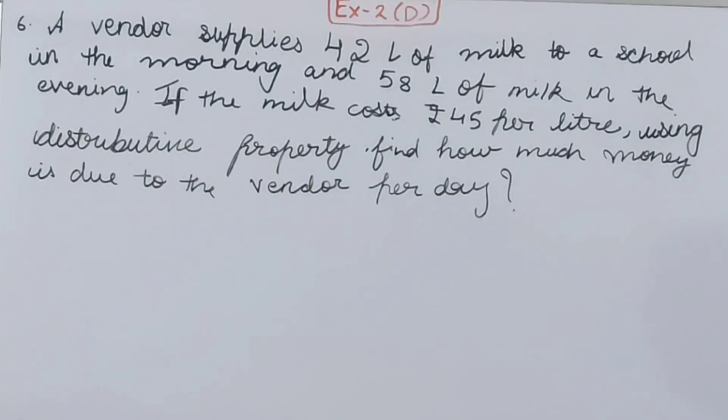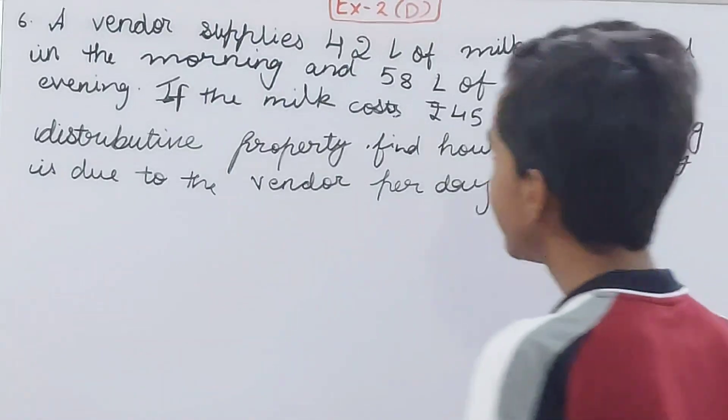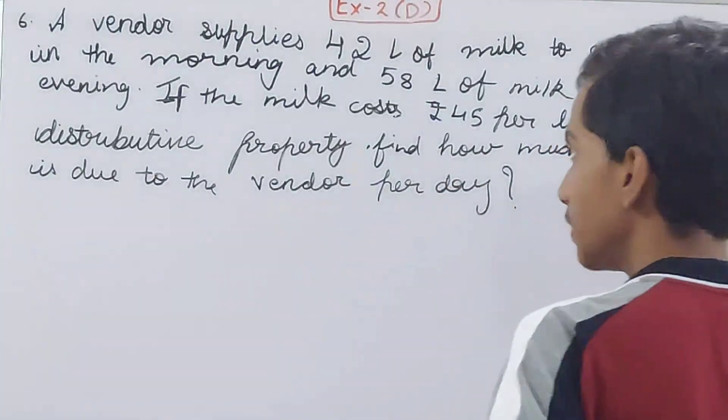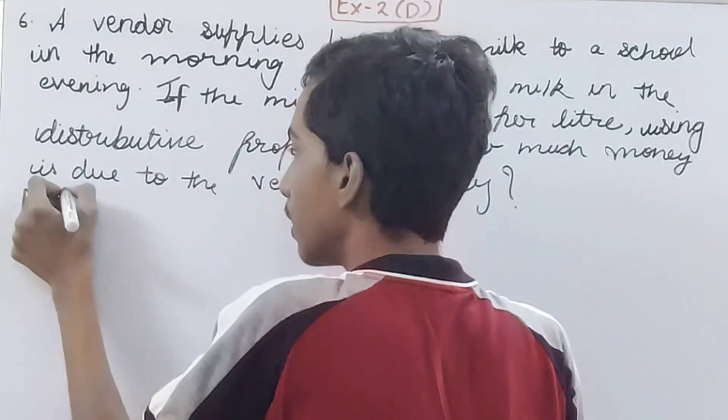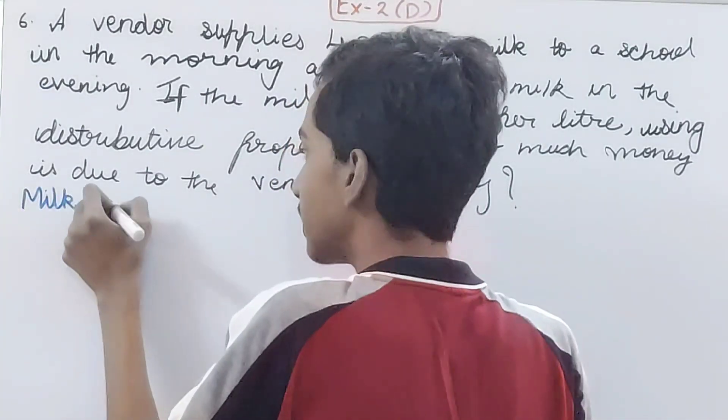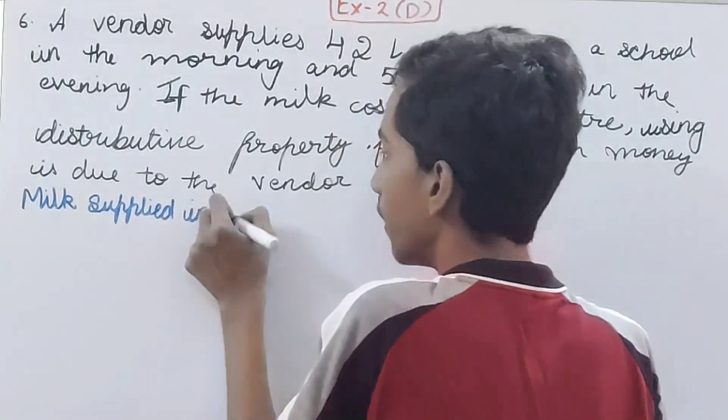...find how much money is due to the vendor per day. Now see here, a vendor supplies 42 liters of milk to a school in the morning, so I'll write here: milk supplied in morning.